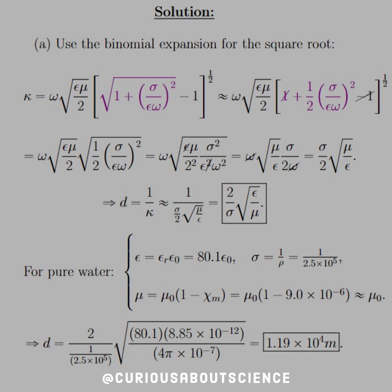Alright, so for pure water, we see that epsilon equal to epsilon r epsilon naught, which is equal to about 80.1 epsilon naught. The conductivity is equal to 1 over 2.5 times 10 to the 5. Mu is equal to mu naught, 1 minus chi m's susceptibility. And so, with the susceptibility of water being so low, 1 minus 9 times 10 to the negative 6, that's approximately mu naught.